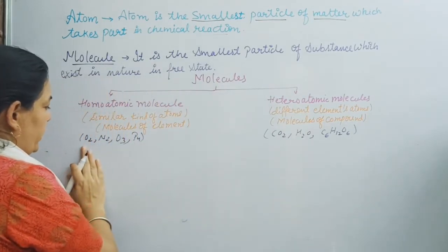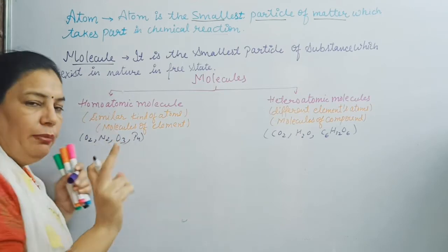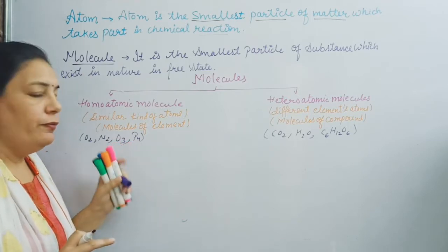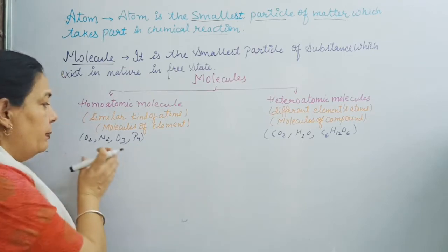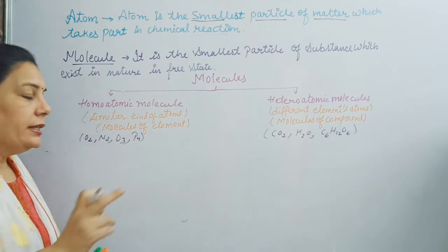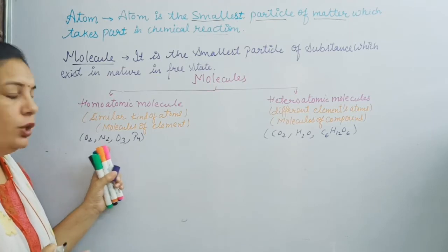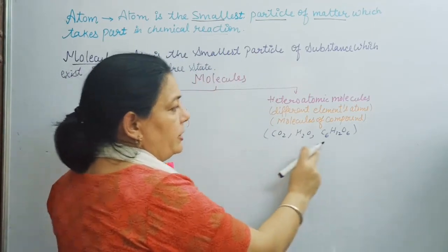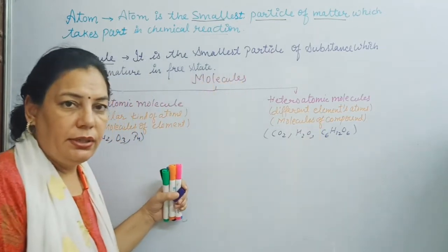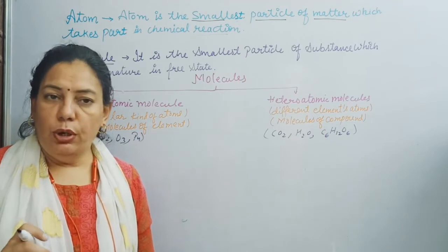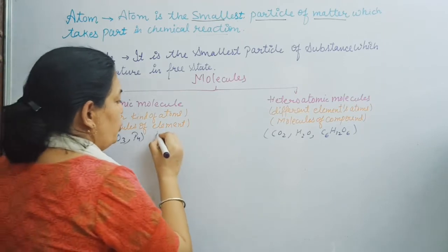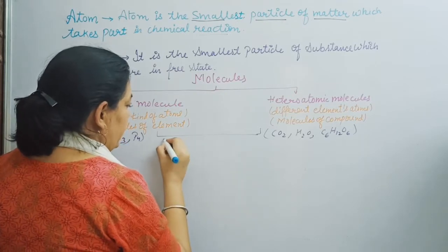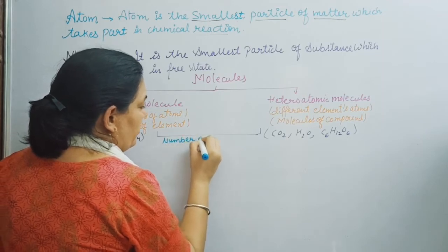We can observe that oxygen and nitrogen are made up of only two atoms, while O3 is made up of three atoms of oxygen, and phosphorus P4 is made up of four atoms. So the number of atoms may be different within homoatomic molecules. The next step of classification of molecules is based on the number of atoms. On this basis, molecules are further divided into various categories.